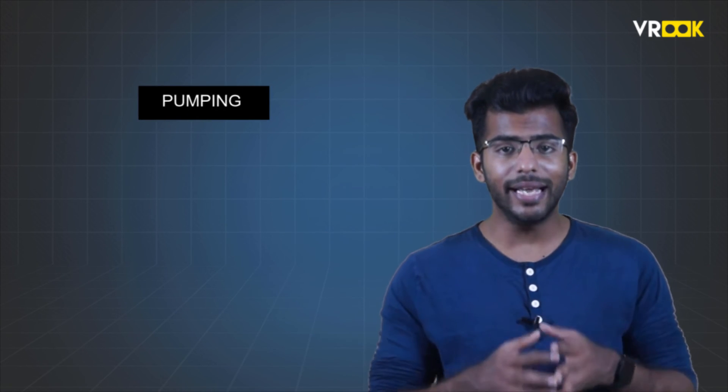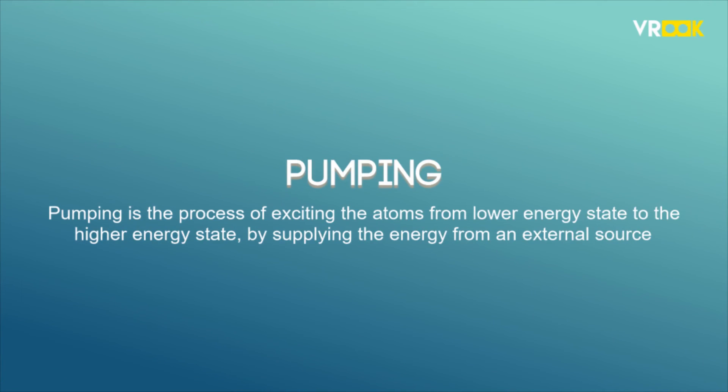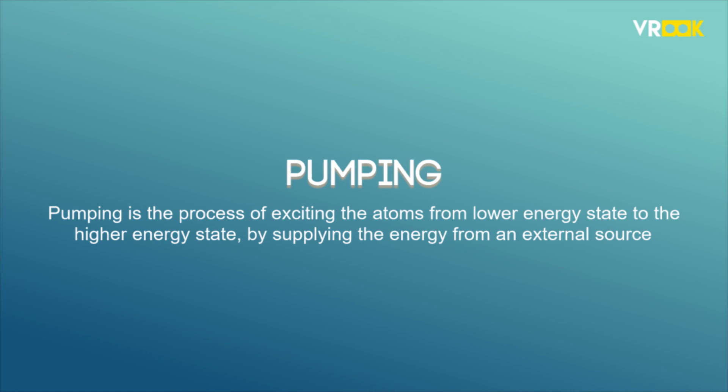Before we end this video, let us learn a few important terms involved in laser. They are pumping, lasing, and active system. Pumping is the process of exciting the atoms from lower energy state to the higher energy state by supplying the energy from an external source. That external source can be a DC battery or any other power supply. The next term is lasing.